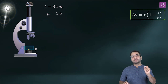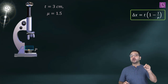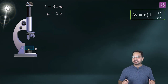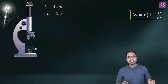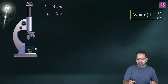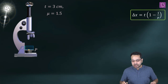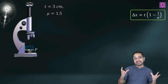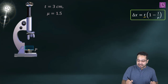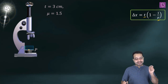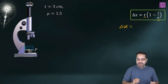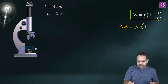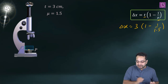The microscope will also have to be adjusted to focus on the mark again. To calculate the magnitude of shift, the formula is: delta x = t × (1 − 1/μ) when the surrounding is air, where t is the thickness and μ is the refractive index of the slab. So delta x = 3 cm × (1 − 1/1.5).